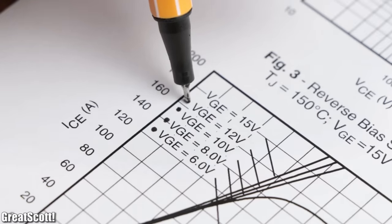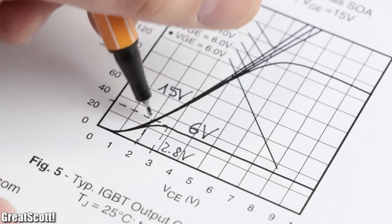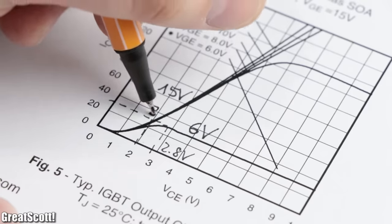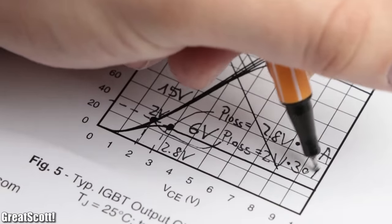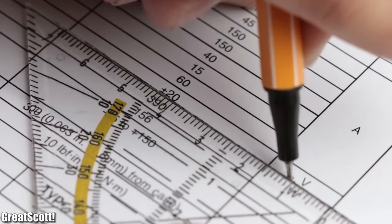And by using higher gate voltages up to 15 volts, the collector emitter voltage will always be lower at a given current flow, which means less power losses. Just make sure not to exceed the maximum gate emitter voltage.